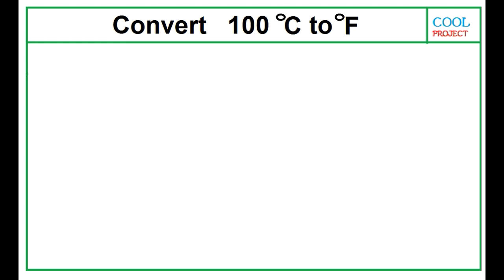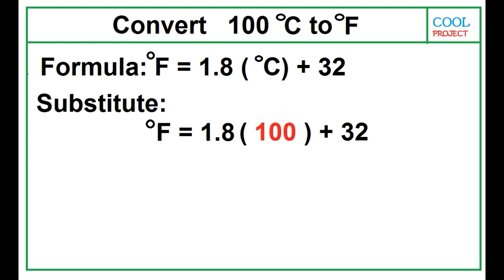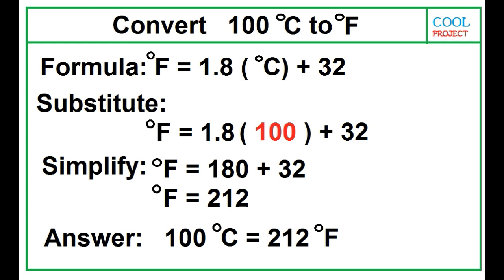Convert 100 degrees Celsius to degrees Fahrenheit. First, write the formula: degree Fahrenheit is equal to 1.8 times degree Celsius plus 32. Next, substitute the given value, which is 100. Degree Fahrenheit is equal to 1.8 times 100 plus 32. Find the product of 1.8 times 100 before adding 32. 180 plus 32 is equal to 212. The answer is 100 degrees Celsius is equal to 212 degrees Fahrenheit.